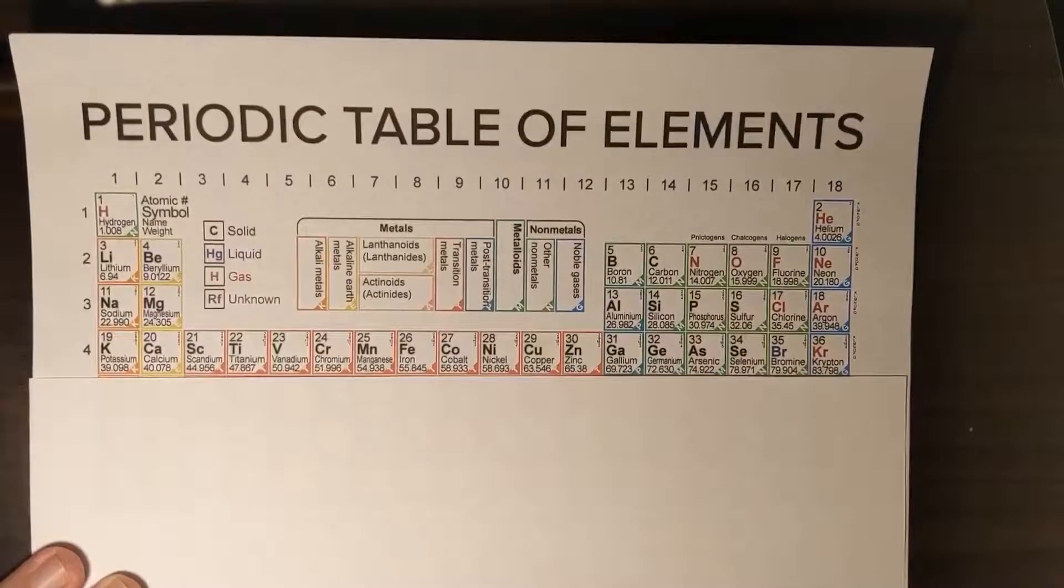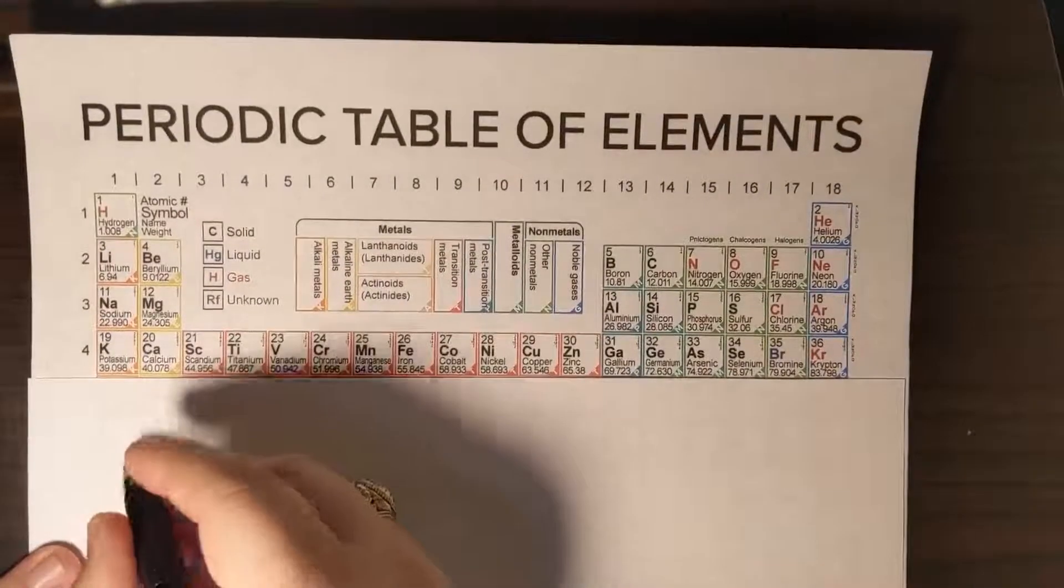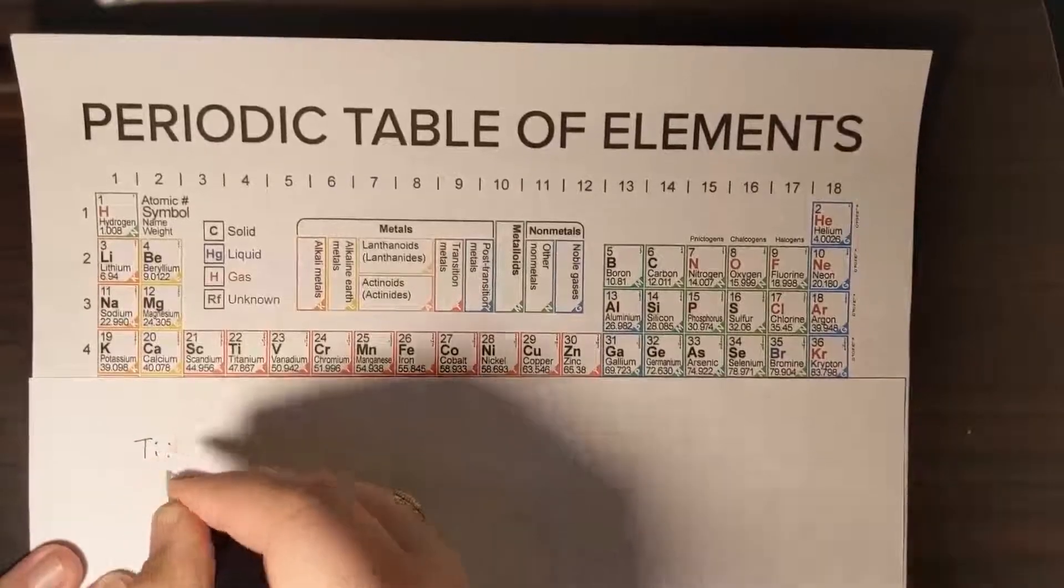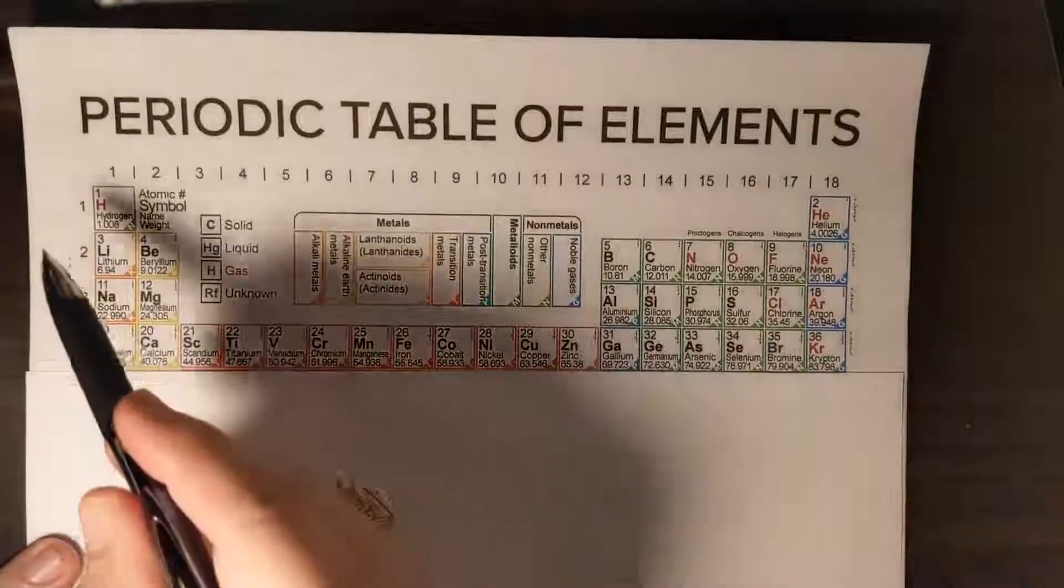In this example we want to look at what the electron configuration will be for titanium and so we'll start by writing the symbol for the element we care about. Titanium is abbreviated Ti and like last time we'll start with hydrogen.